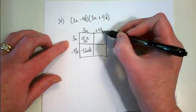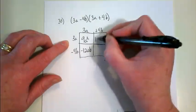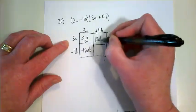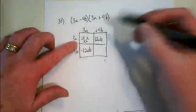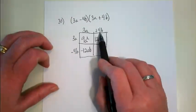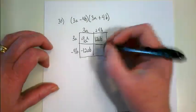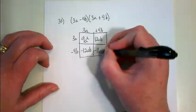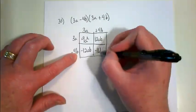This here is now 4b times 3a, and I get a positive 12, but I also get an ab, because a times b gives me ab. And then positive 4b times negative 4b gives me negative 16, and b times b is b squared.